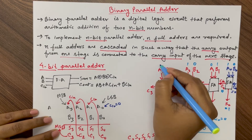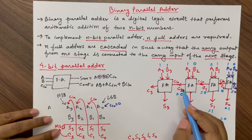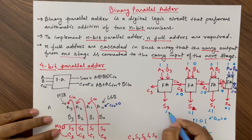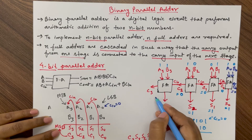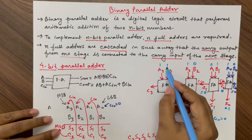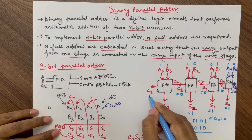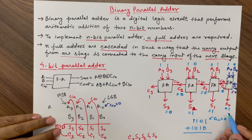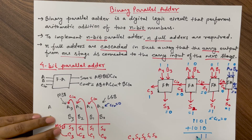A3 and B3 are 1 and 1, with C-in = 0. XOR of 1, 1, and 0 gives S3 = 0. The carry output is AB + AC-in + BC-in; since AB = 1×1 = 1, the carry C3 = 1. So the final addition is S0, S1, S2, S3, C3 = 1, 1, 1, 0, 1, which we write as 10111.